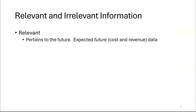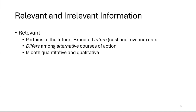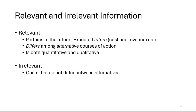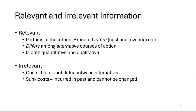Relevant costs pertain to the future. They are expected future costs or revenue, and they differ among alternative courses of action — something that changes based on a decision. They are both quantitative and qualitative. Irrelevant costs are any costs that don't change based on your decision. For instance, if insurance won't change no matter what car you have, that's irrelevant. However, if buying a new car causes insurance to go up, the difference is what you care about. Sunk costs are always irrelevant because you can't change them.